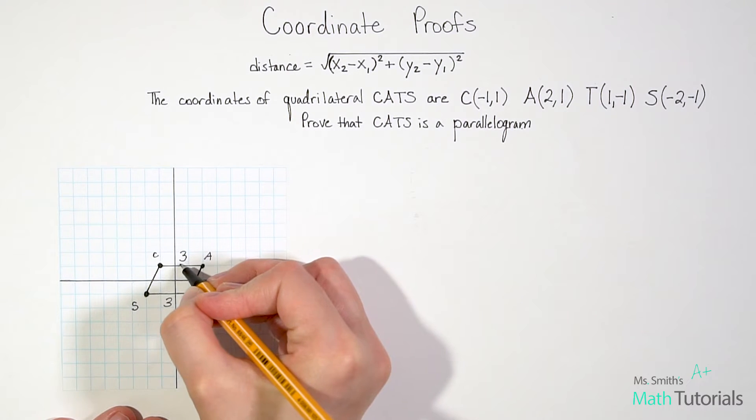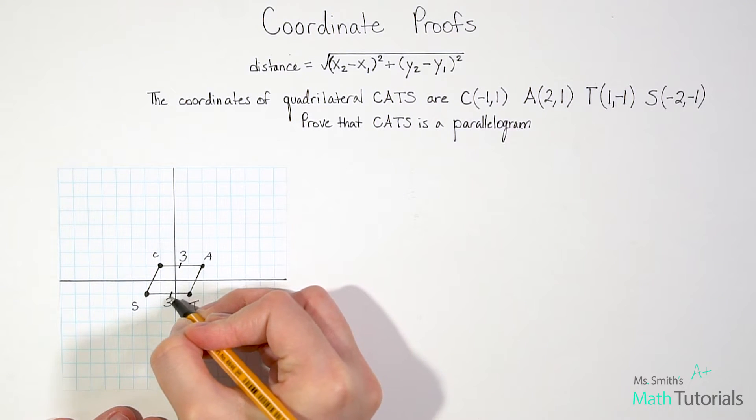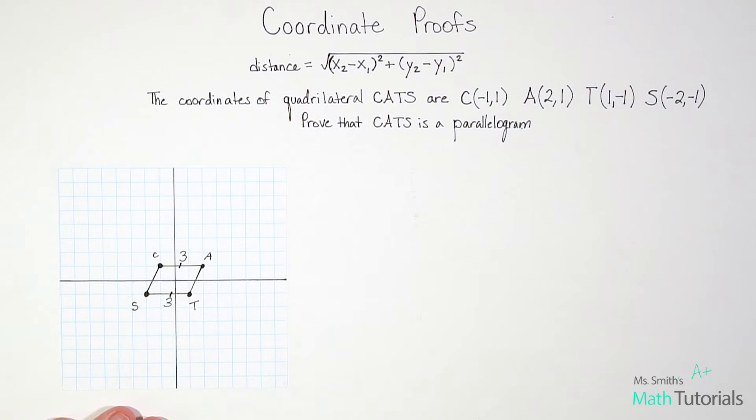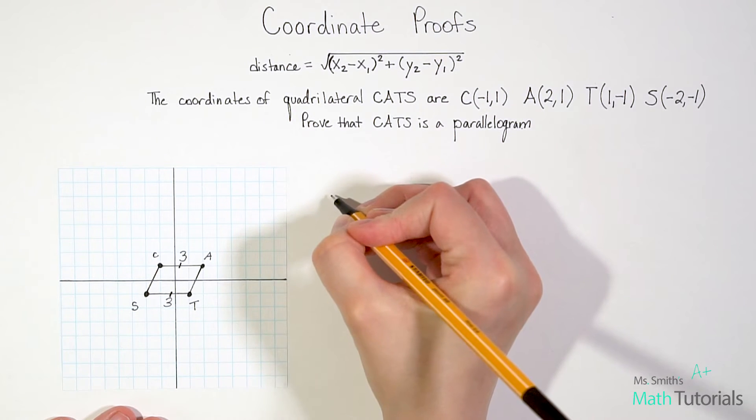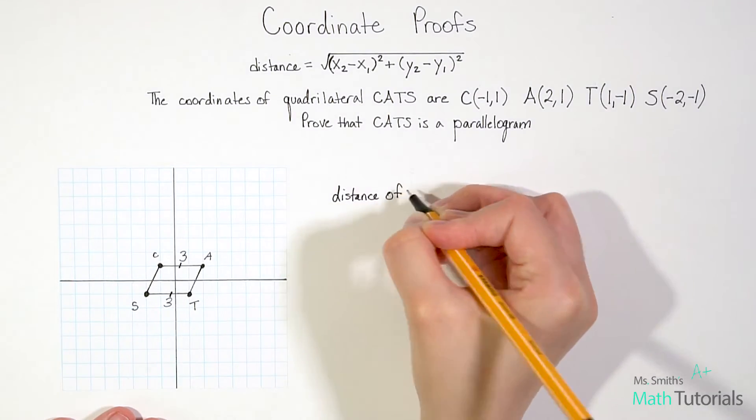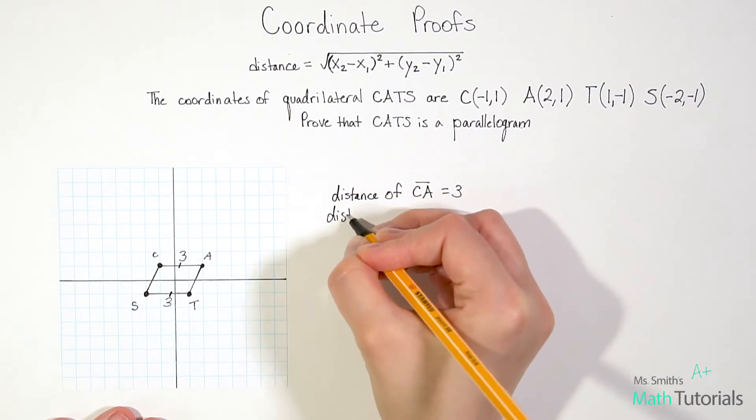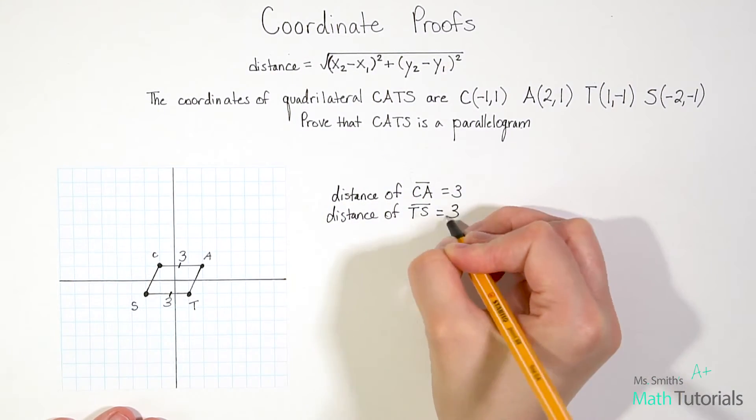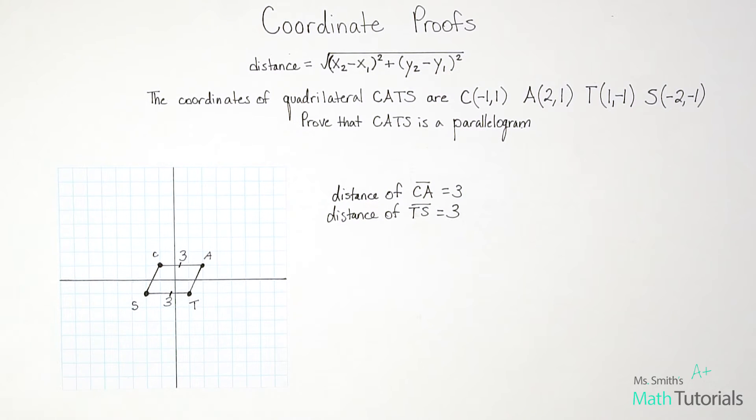So I can say that these two sides are congruent to each other. Now I'm actually going to write it over here, because I want to prove it. I want to show my steps proving this is a parallelogram. So I'm going to go ahead and note what we just said. Okay, so far, so good. Those sides are congruent to each other.